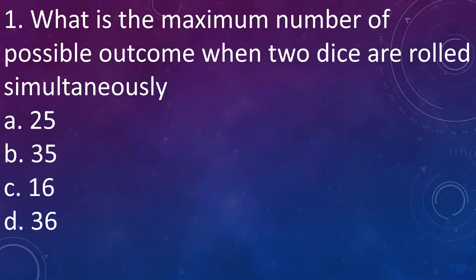What is the maximum number of possible outcomes when two dice are rolled simultaneously? A: 25, B: 35, C: 16, D: 36. The answer is D: 36.